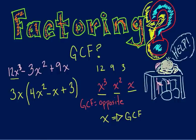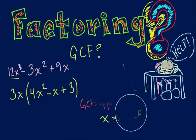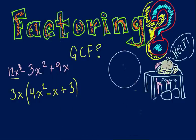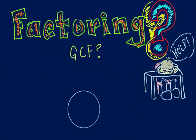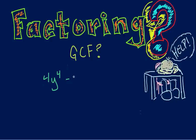Let's go ahead and erase this and do another one, just so we understand what we're talking about. Remember, factoring — we have to take out the greatest common factor. Let's try another one on a smaller scale. Let's do 4y to the fourth power minus 16y cubed minus 2y squared.